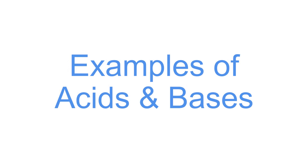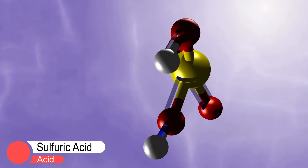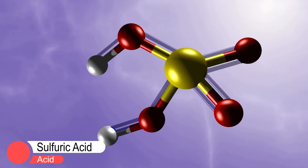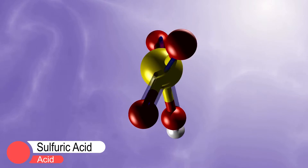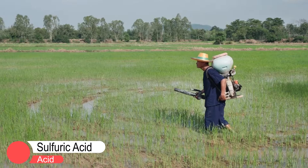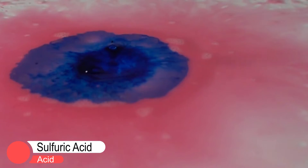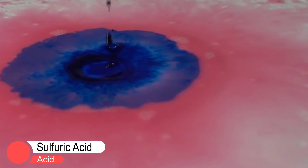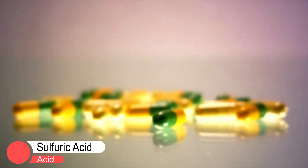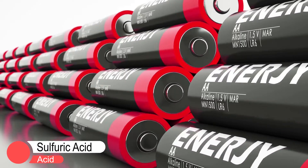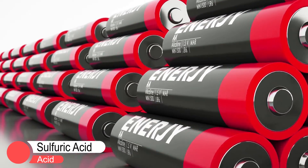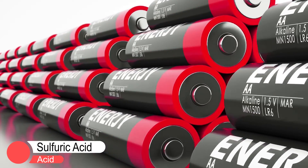Here are some examples of acids and bases in our daily lives. Sulfuric acid is used in some industrial processes, such as in manufacturing fertilizers, dyes, and drugs. It is also used in lead storage batteries.